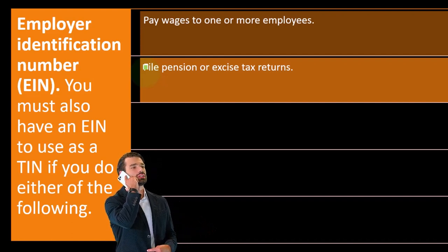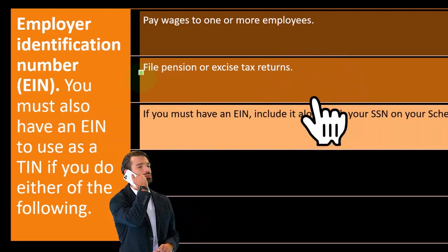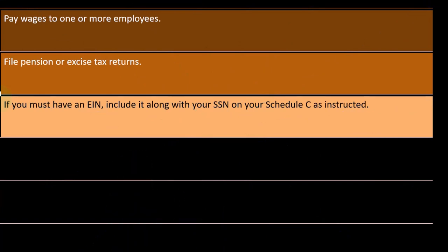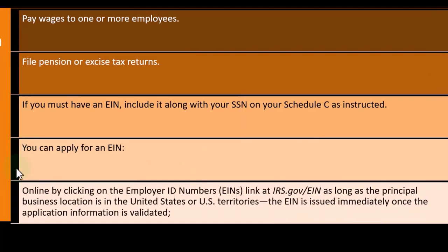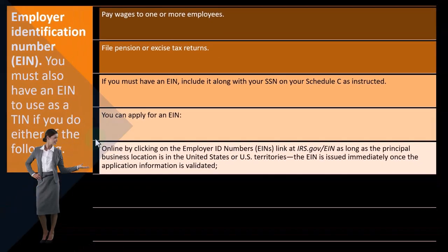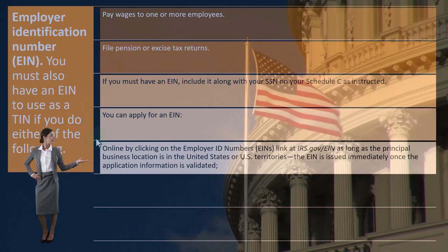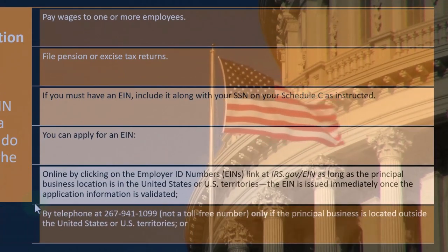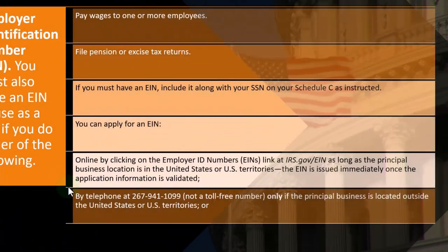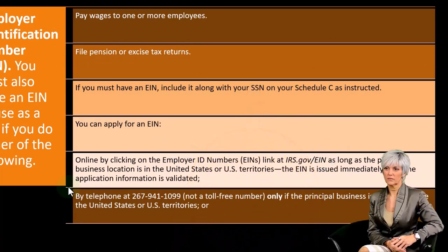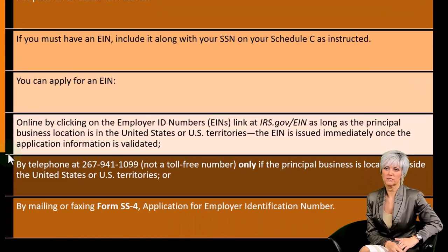You must also have an EIN if you file pension or excise tax returns. If you must have an EIN, include it along with your SSN on your Schedule C as instructed. You can apply for an EIN online at irs.gov/EIN, as long as the principal business location is in the United States or U.S. territories — the EIN is issued immediately once the application is validated. You can also apply by telephone at 267-941-1099, but that's not a toll-free number and only for businesses located outside the U.S.